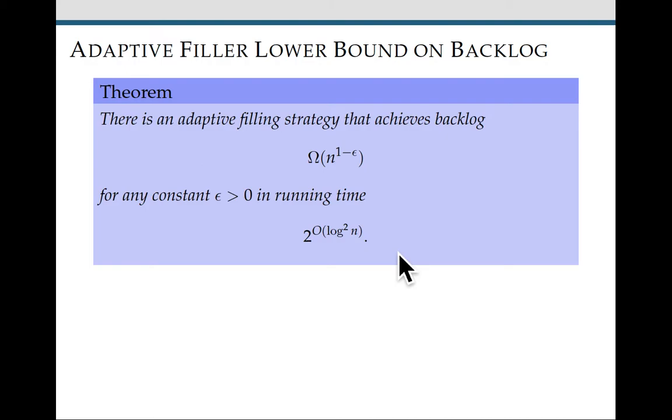It's polynomial. In the classic multiprocessor cup game, we can't get higher than logarithmic backlog, but here we're getting polynomial backlog, and in really reasonable time.